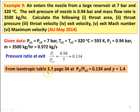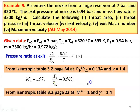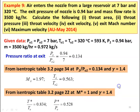From isentropic table 3.2 page number 34 at P2 by PO2 equal to 0.134 and gamma equal to 1.4, we take M2 equal to 1.97 and T2 by TO2 equal to 0.563. From isentropic table 3.2 page number 22 at choking condition M star equal to 1 and gamma equal to 1.4, we have T star by TO equal to 0.834 and P star by PO equal to 0.528.